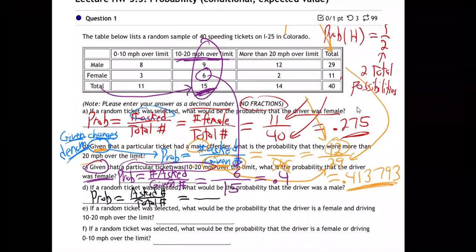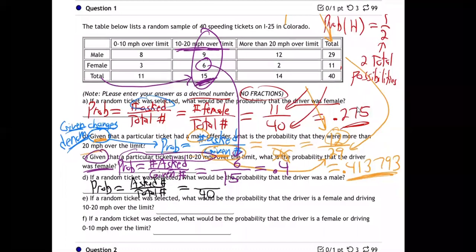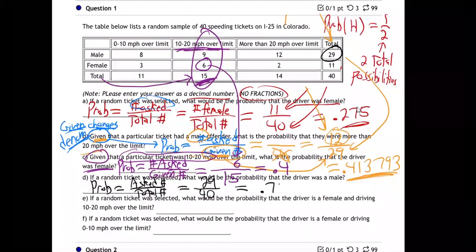What's the total number? Back to 40. The denominator is back to 40 because this is not a given question — we're dealing with the whole entire group now. What's the chance they were male? How many males out of the 40? 29 out of 40. Divided on my calculator: 0.725.